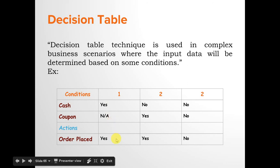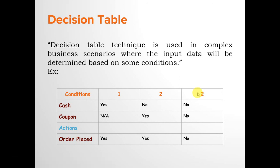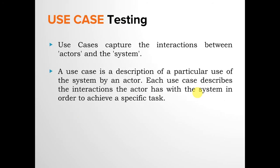In condition 1, if you have cash, there is no need to check whether you have a coupon — you will be able to place the order successfully. In condition 2, if you have no cash, it checks whether you have a coupon; if you have a coupon, you can still place the order successfully. In condition 3, you have no cash and no coupon, so you won't be able to place the order. This is how the decision table technique works.